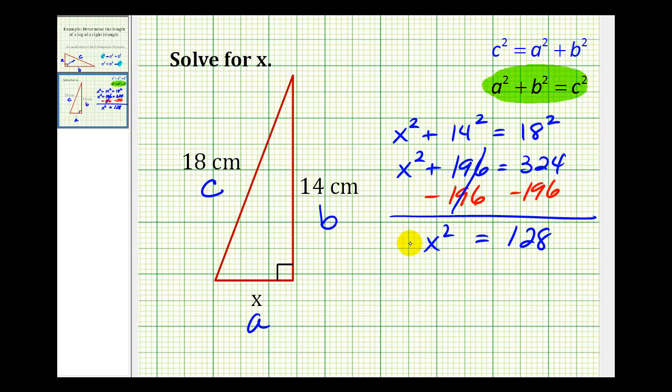Now we'll take the square root of both sides. We only have to be concerned about the positive square root, or the principal square root, because we know x represents a length.